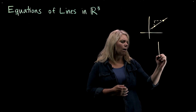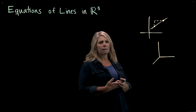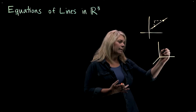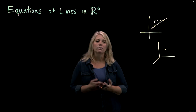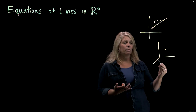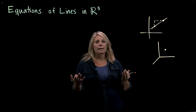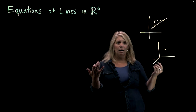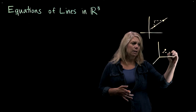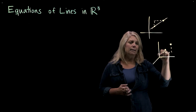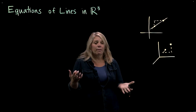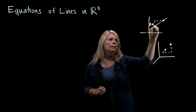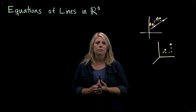Similarly in R3, you need those same kinds of pieces of information, but it's a little more complicated because you're in three dimensions. You need a point — a location where to start — and then you need to know where to go from that point. The difficulty is that instead of just slope, a ratio of change in y to change in x, you've got changes in all three directions: x, y, and z.